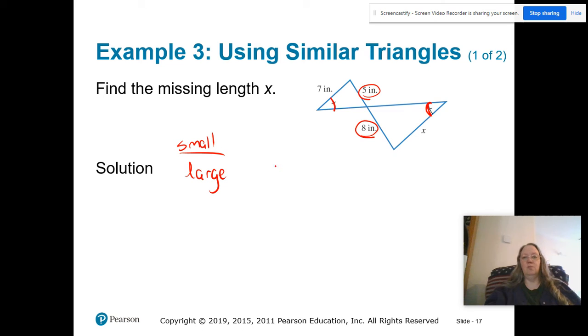So on the small triangle, that would be five inches. And on the larger angle, that would be eight inches. Now we also know that these two angles have to be the same because they're vertical angles, which means that the sides opposite right there, they have to be proportional. These are my corresponding sides.